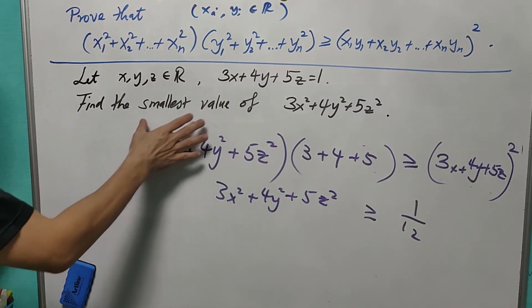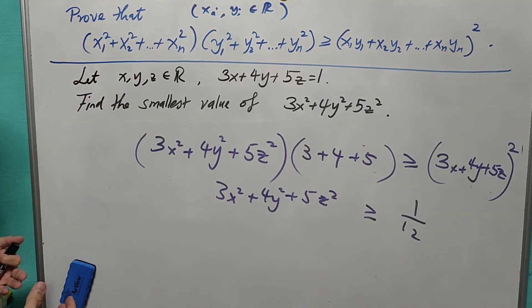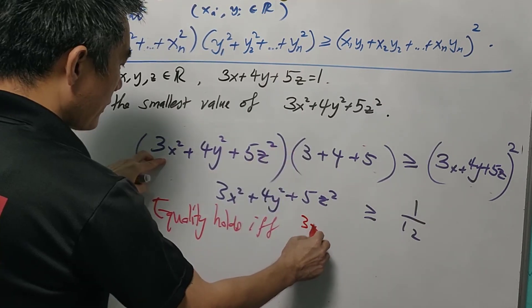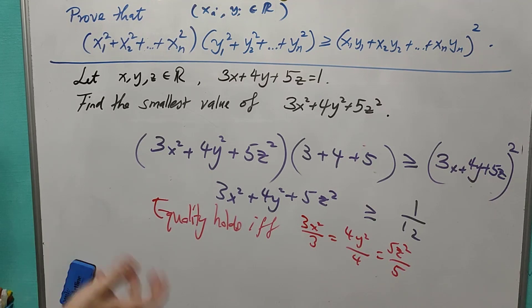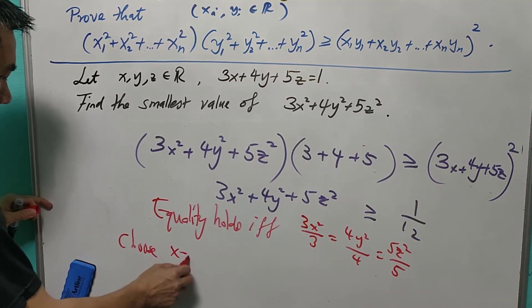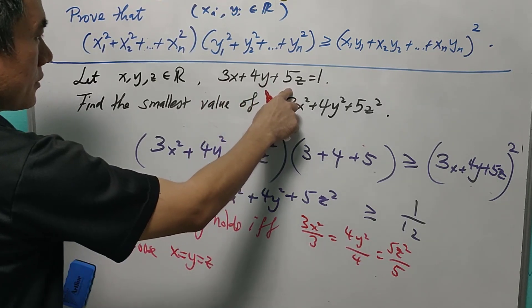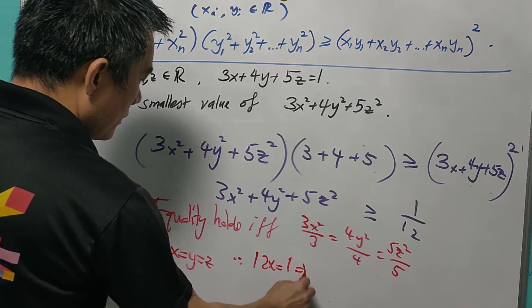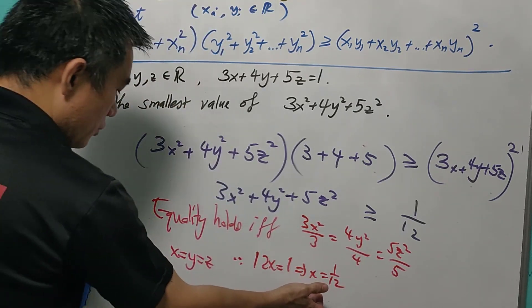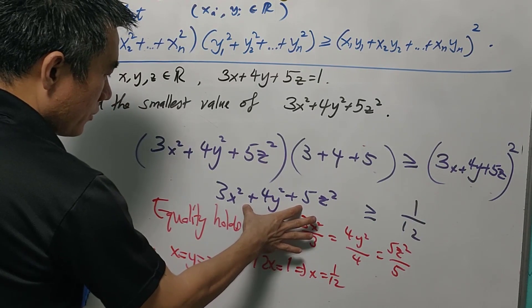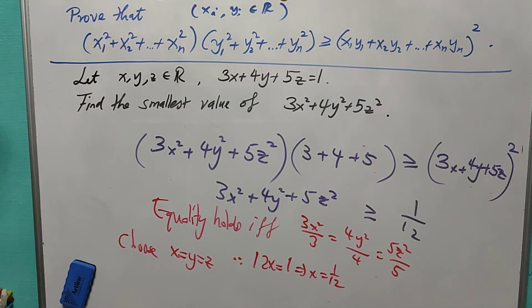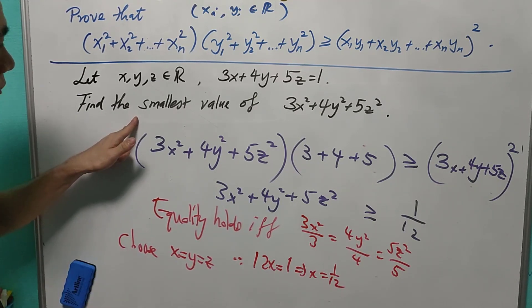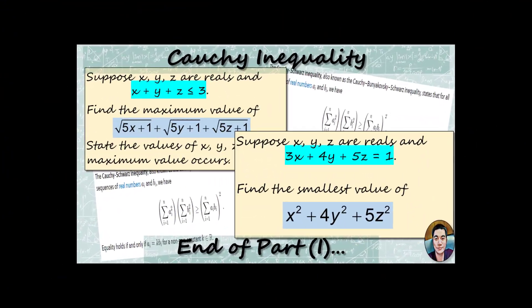However, we must check whether equality is achievable. Equality holds if and only if 3x²/3 = 4y²/4 = 5z²/5, meaning x² = y² = z². Choosing x = y = z gives 12x = 1, so x = 1/12. With x = y = z = 1/12, the expression equals 12·(1/12)² = 1/12, which confirms the minimum value is 1/12.